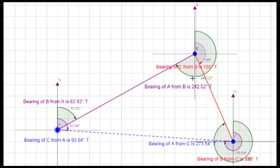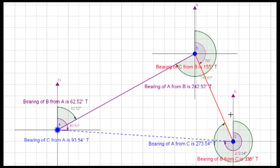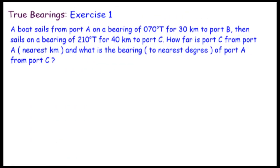For example, if we know a bearing is 155 degrees true, we know the angle between that line and the south direction is 180 minus 155 = 25 degrees. And by alternate angles that 25 degrees appears on the other side too. These alternate angle ideas will be very useful in solving bearing problems.